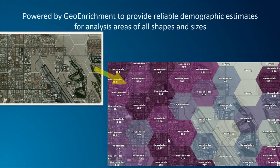Under the hood, the Geo Enrichment Service powers and feeds infographics with all of that data. One lesser-known but extremely important feature of the Geo Enrichment Service is demographic apportionment — essentially taking and weighting queries by the underlying distribution of populations for more accurate demographic estimates. It's built in, so you don't need to worry about the details.